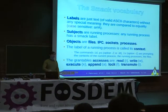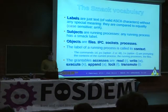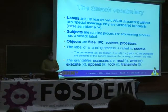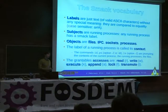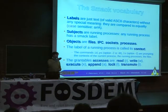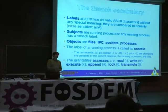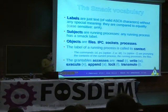What are labels? Subject, object. Labels are just text without any meaning. The case is sensitive. The subjects are the running processes. The objects are files, IPC, sockets, and processes. The label of a process is called its context — that is the security context. You can show, using the ps command, the context of each running process, and using 'id', your own context. And 'ls' shows you not the context of the file, but the labels of these files.